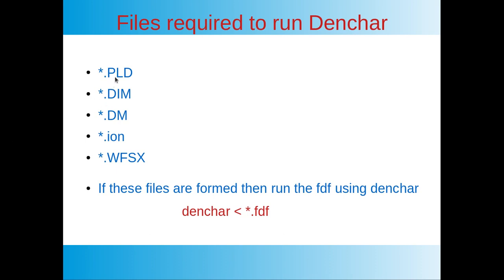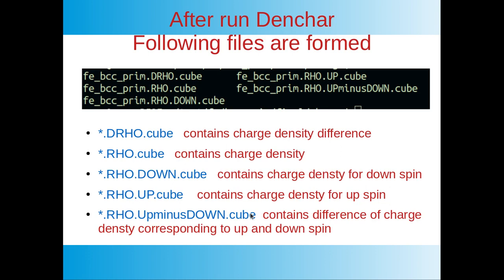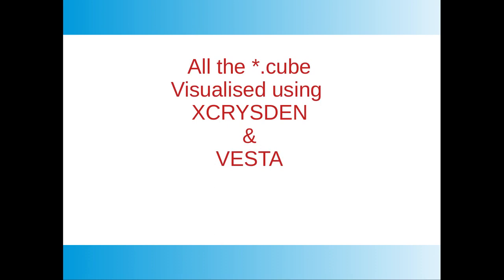After running SIESTA, the following files are formed: the .tld file, .dm, .tm, .ion, and .WFSx files. Then we run that FDF file again using Denchar utility. After the run of Denchar, files with the extension .q are formed. One file is drho.q which contains charge density difference information, then rho.q which contains charge density, rho.down.q contains charge density for down-spin, rho.up.q which contains charge density for up-spin, and rho.up-minus-down.q which contains the difference of charge density corresponding to up and down spin.